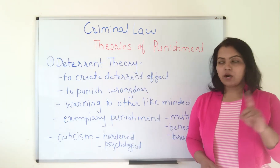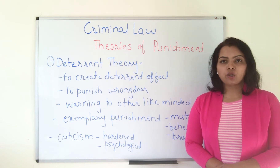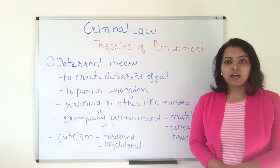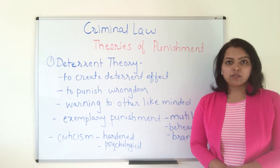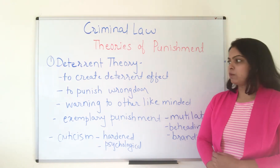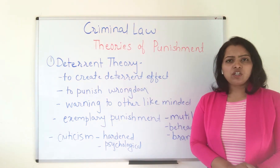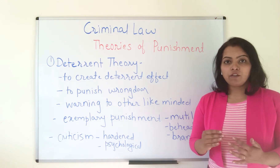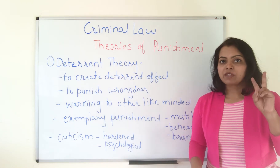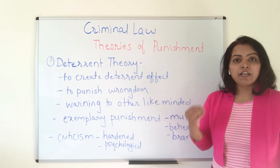Theory number one is the deterrent theory. Deterrent theory provides for making a very serious impact on the wrongdoer so that the wrongdoer will be scared of doing the crime again. The advantages of this theory: first, it creates a deterrent effect on the criminal, punishing that person in such a way that he is deterred from committing the crime again, so he is prevented from doing it. Second, it is a punishment to the wrongdoer.